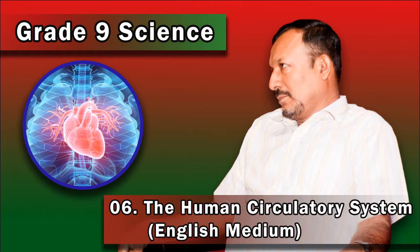Grade 9 science. Today our lesson is the human circulatory system. When you learn this lesson, you have to prepare your own note. For that, use the given points.